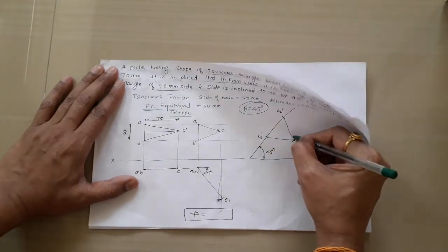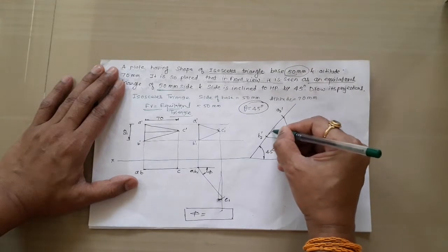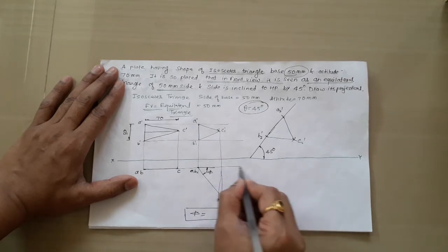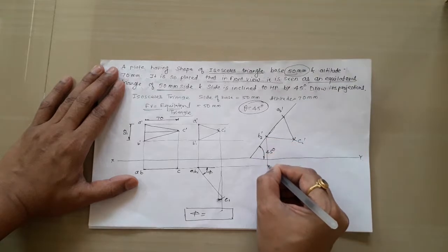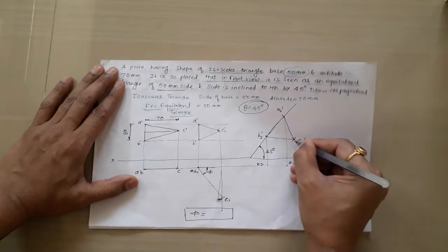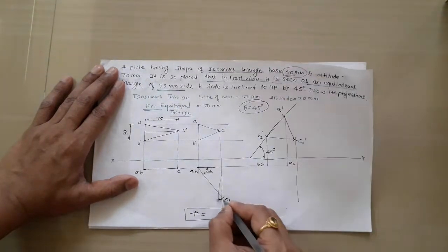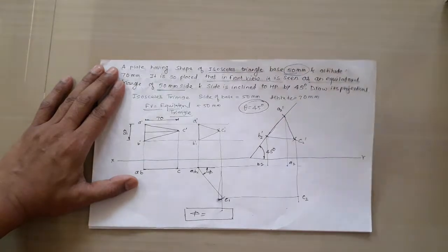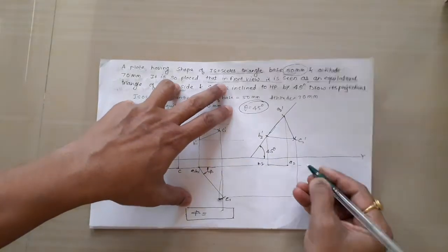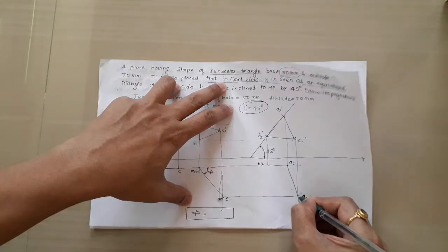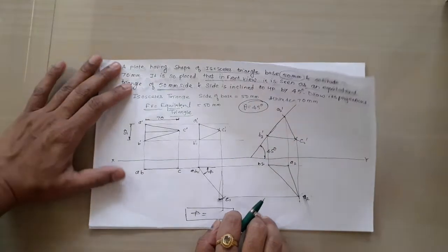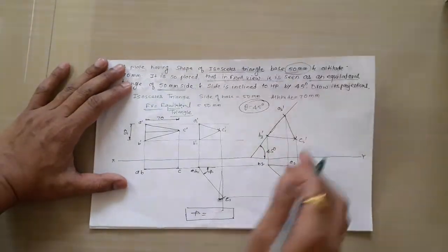Here we have drawn the second-stage top view making one side of the equilateral triangle — the AB side — inclined to XY by 45 degrees. Take projections in the downward direction. The projector for B gives B2, the projector for A gives A2, and the projector for C2-dash gives C2. Join all the points in proper sequence. This is the final-stage top view and final-stage front view.